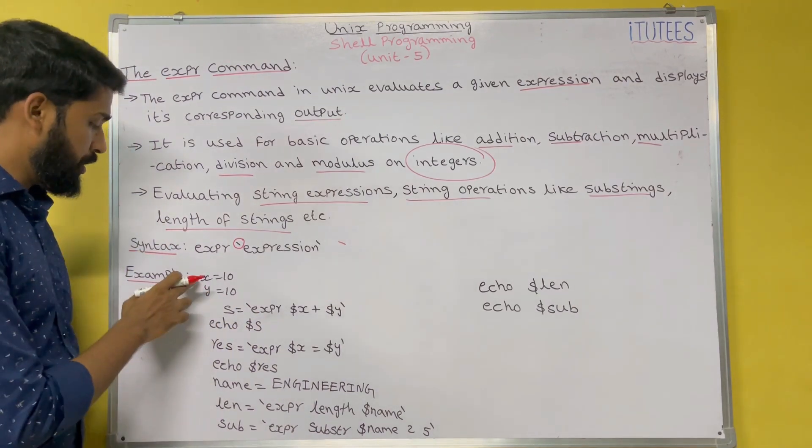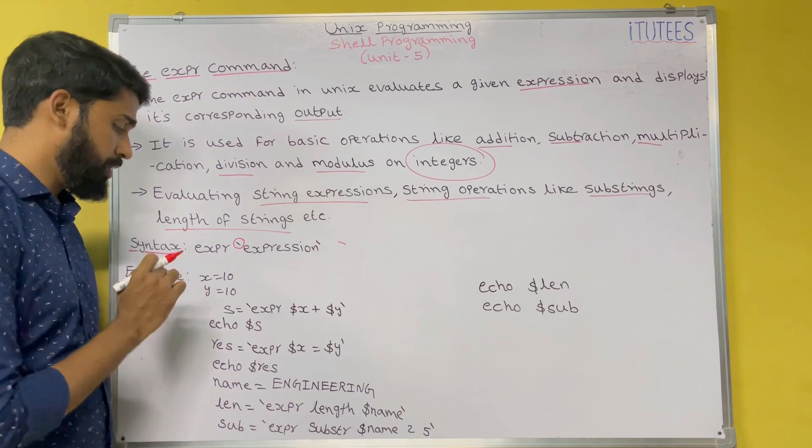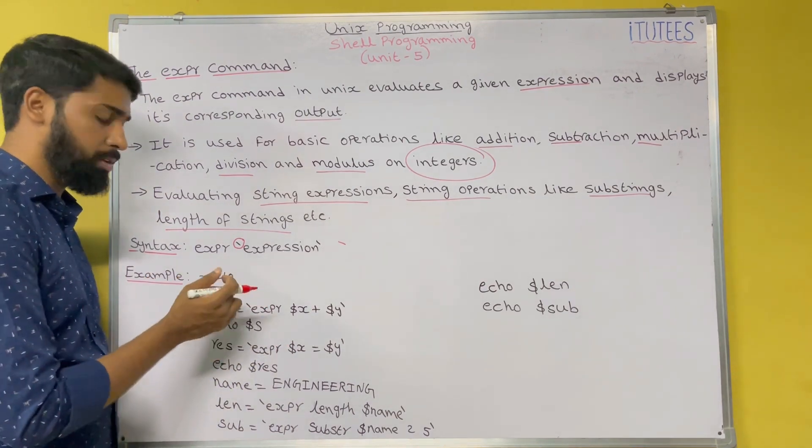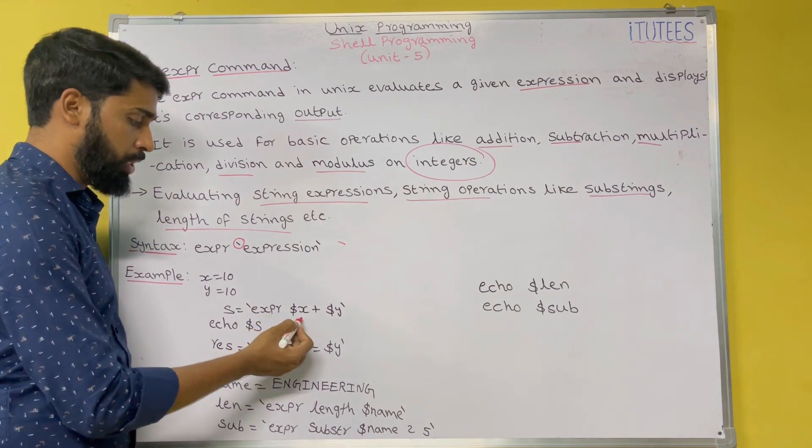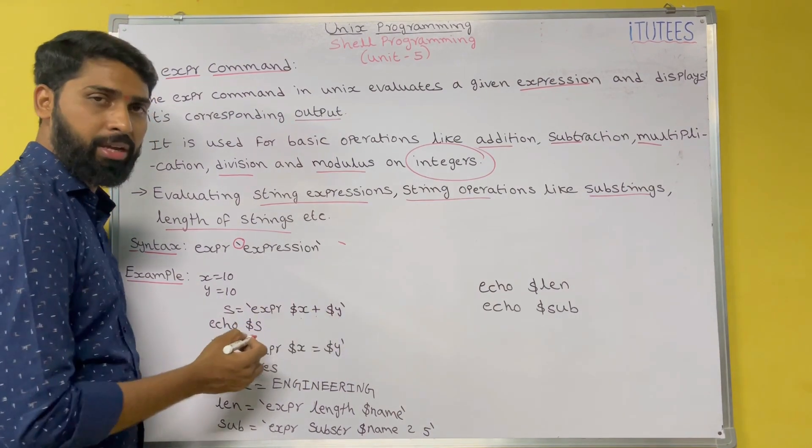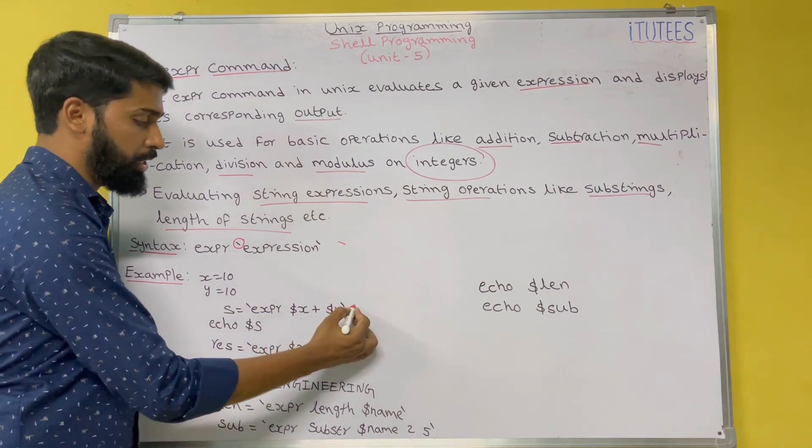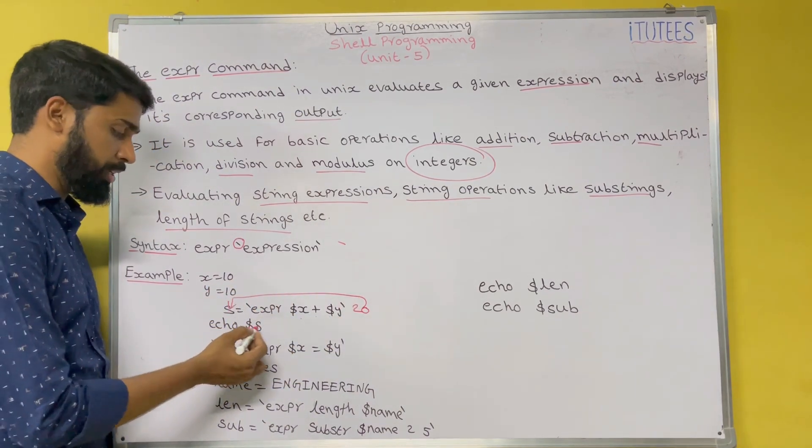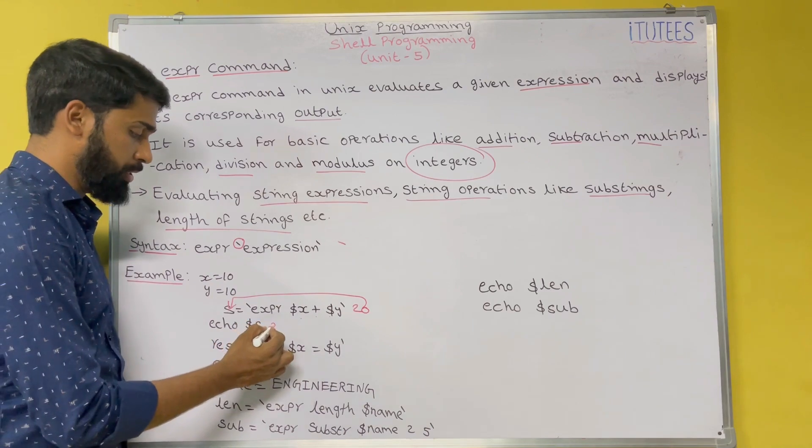So this is the example: we are taking two variables x equals to 10, y equals to 10. I want to find the sum of these two numbers. So s equals to expr dollar x plus dollar y. Now what is the addition here? 20. So 20 is assigned to s. If you print s value then it prints 20.